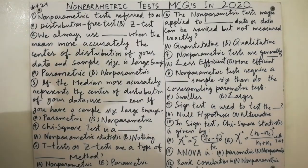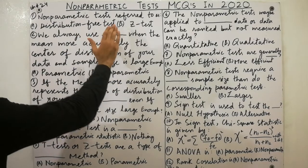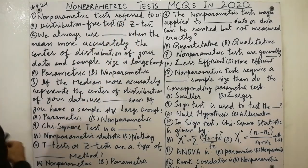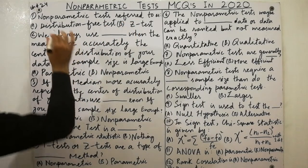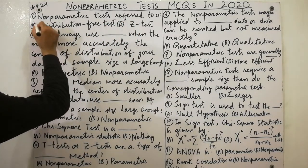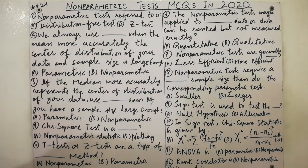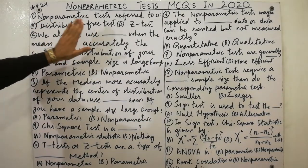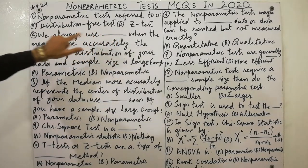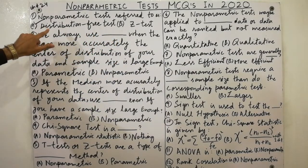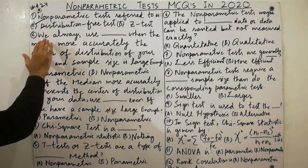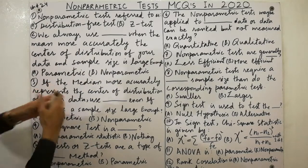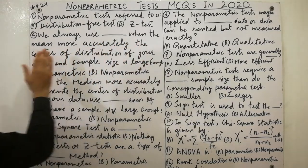Here is the first MCQ, which is very important. Must remember: non-parametric tests are referred to as distribution-free tests. Non-parametric tests are always referred to as distribution-free tests — this is a key point to remember.